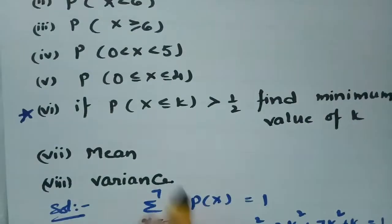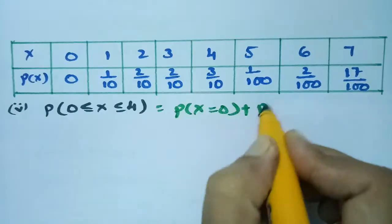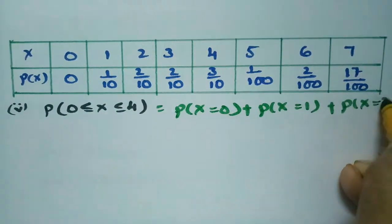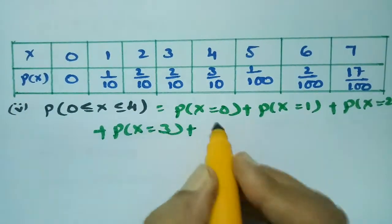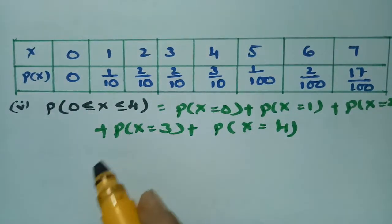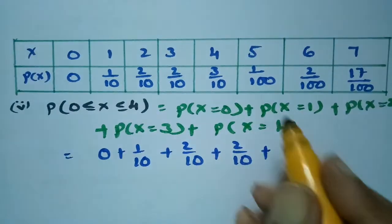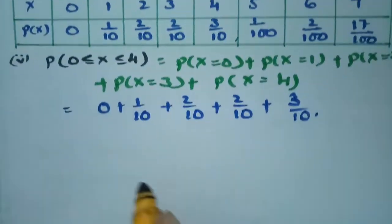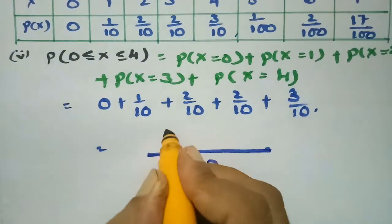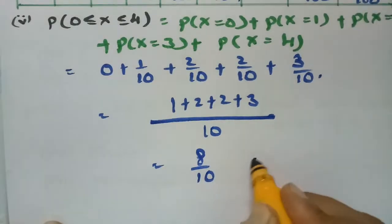The next question is P(0 ≤ X ≤ 4). That is P(X=0) + P(X=1) + P(X=2) + P(X=3) + P(X=4). The values are 0 + 1/10 + 2/10 + 2/10 + 3/10. Taking LCM as 10, this gives 8/10 = 0.8.